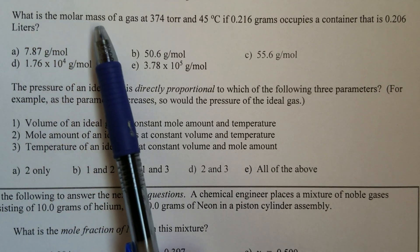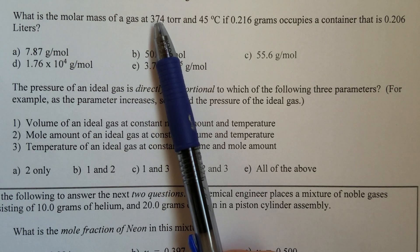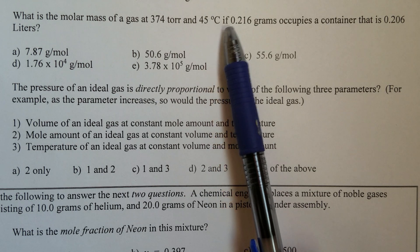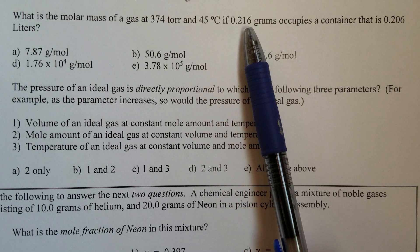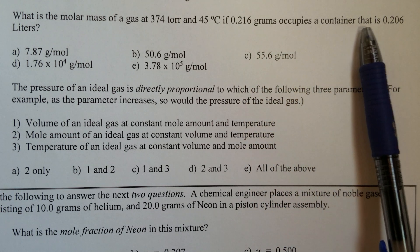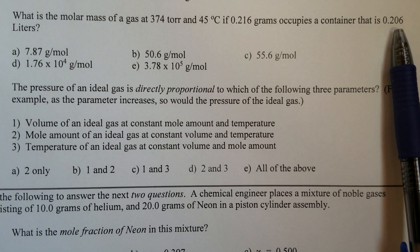What is the molar mass of a gas at 374 torr and 45 degrees Celsius if 0.216 grams occupies a container that is 0.206 liters?